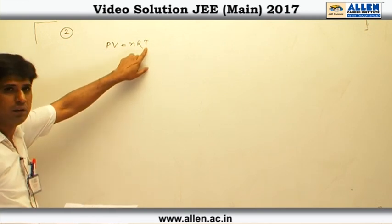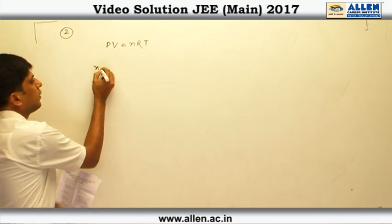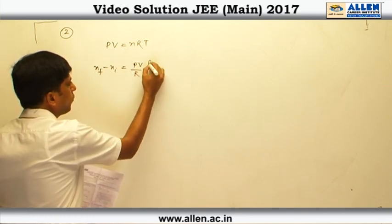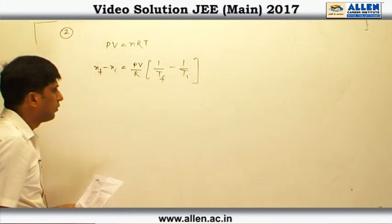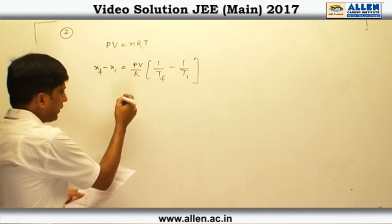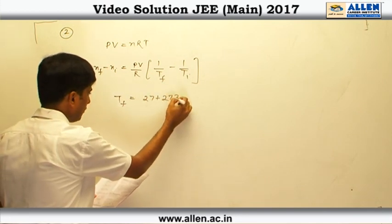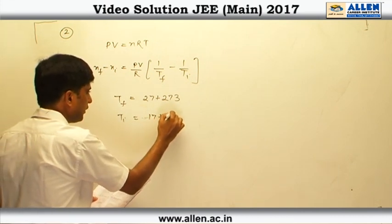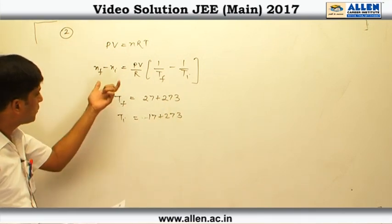Therefore, due to change in temperature number of moles will also change. From this expression we get the change in number of moles as PV by R times 1 upon T final minus 1 upon T initial. Obviously, T final and T initial are the temperature in Kelvin. From the given data, T final is 27 plus 273 and T initial is 17 plus 273 Kelvin.